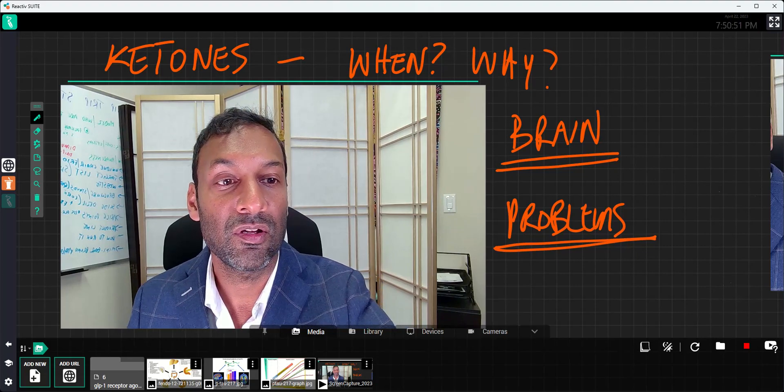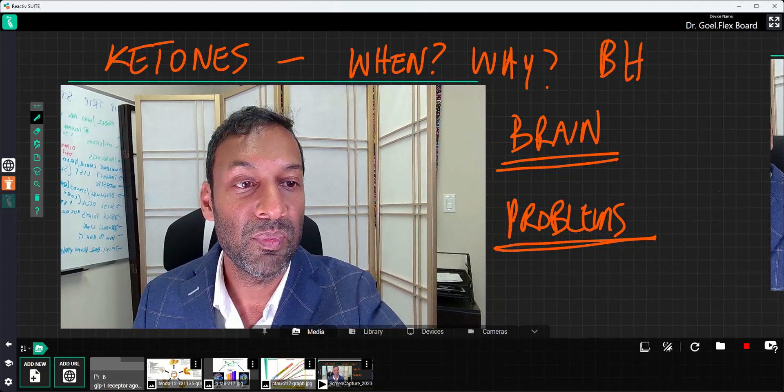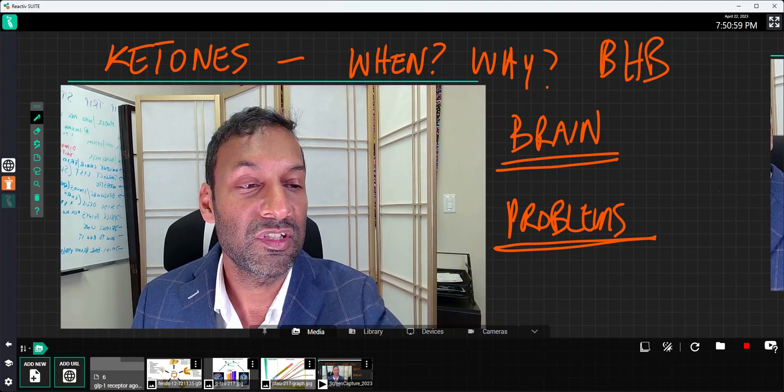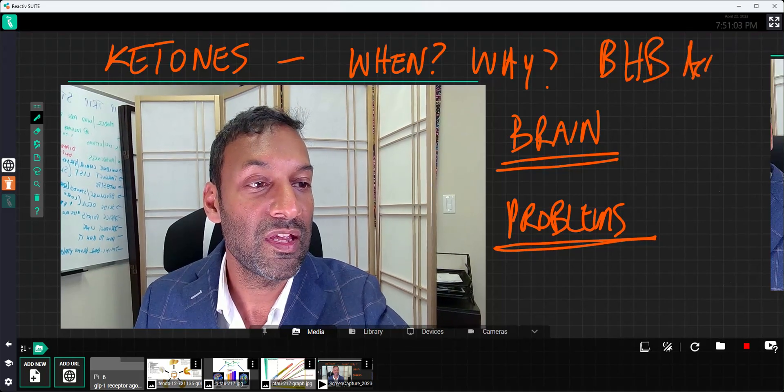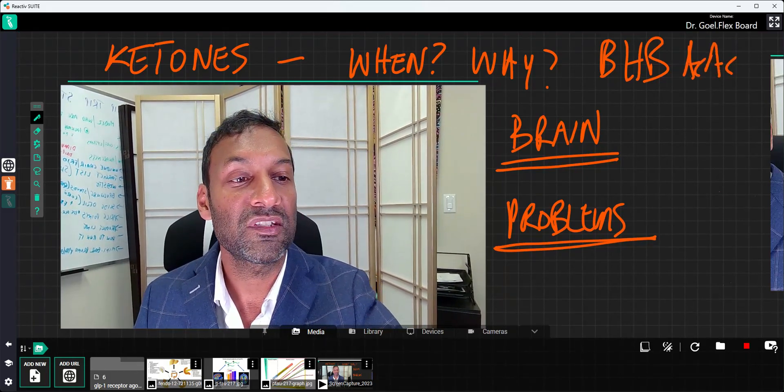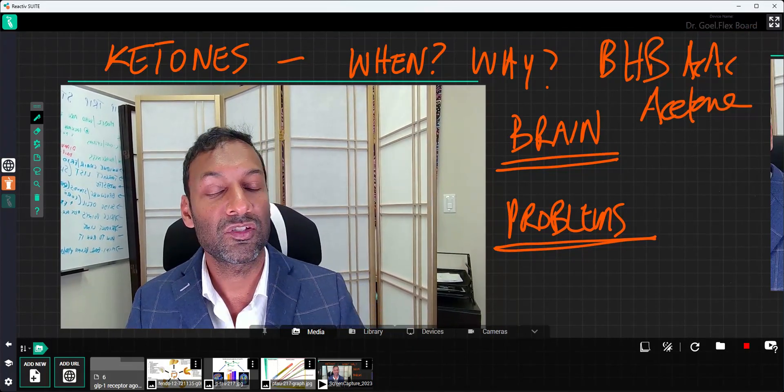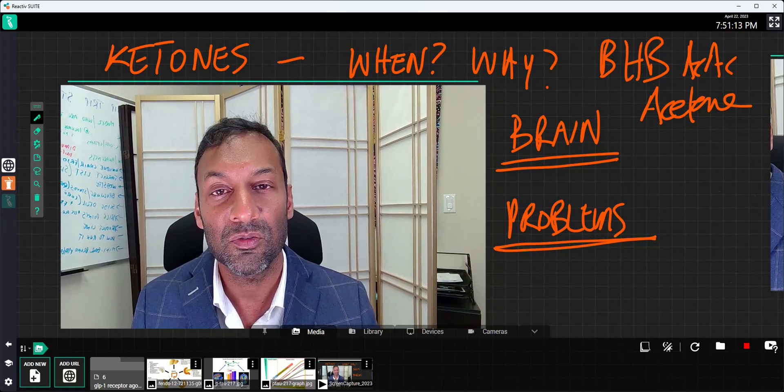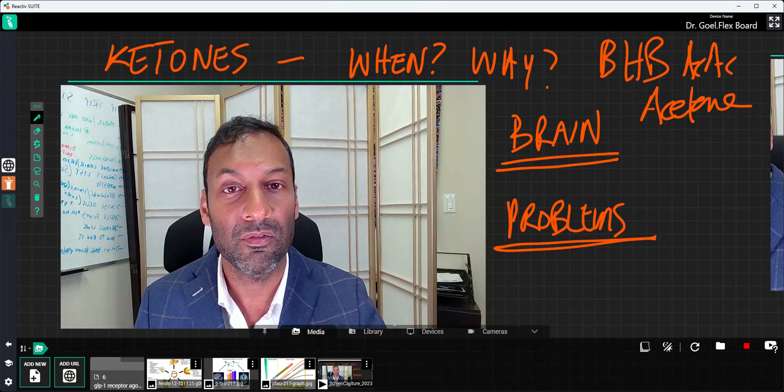These ketones are three different types of ketones. One is called BHB, beta-hydroxybutyrate. The second one is acetoacetate, also ACAC. And the third one is acetone. An acetone you may have heard of has a fruity smell. So people who are fasting, you might notice, have a fruity smell on their breath. That's because acetone's coming out off from their lungs.